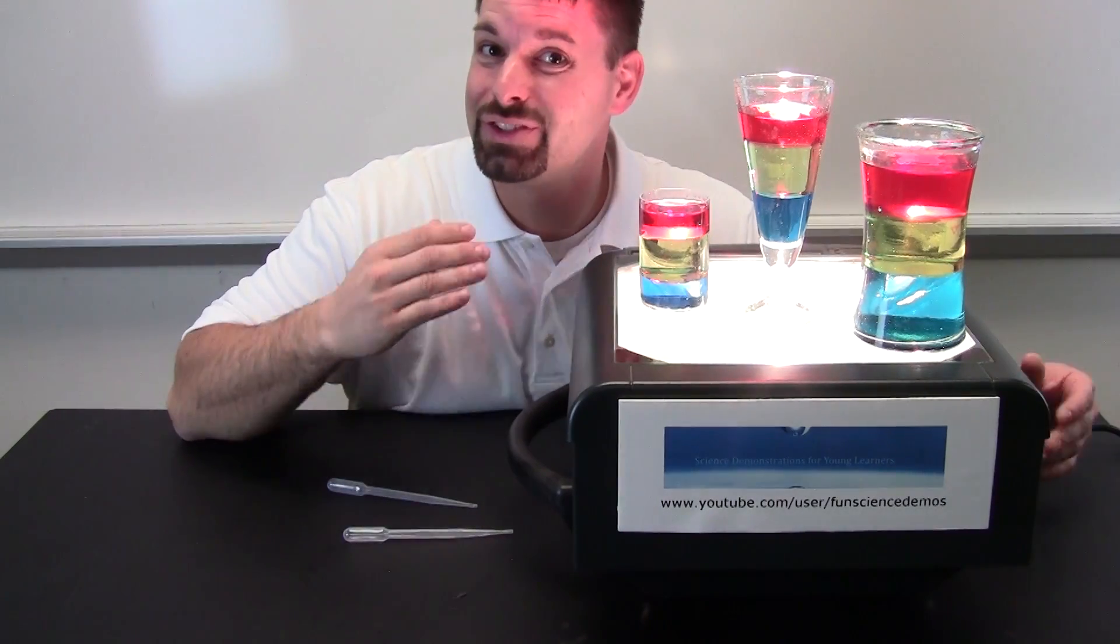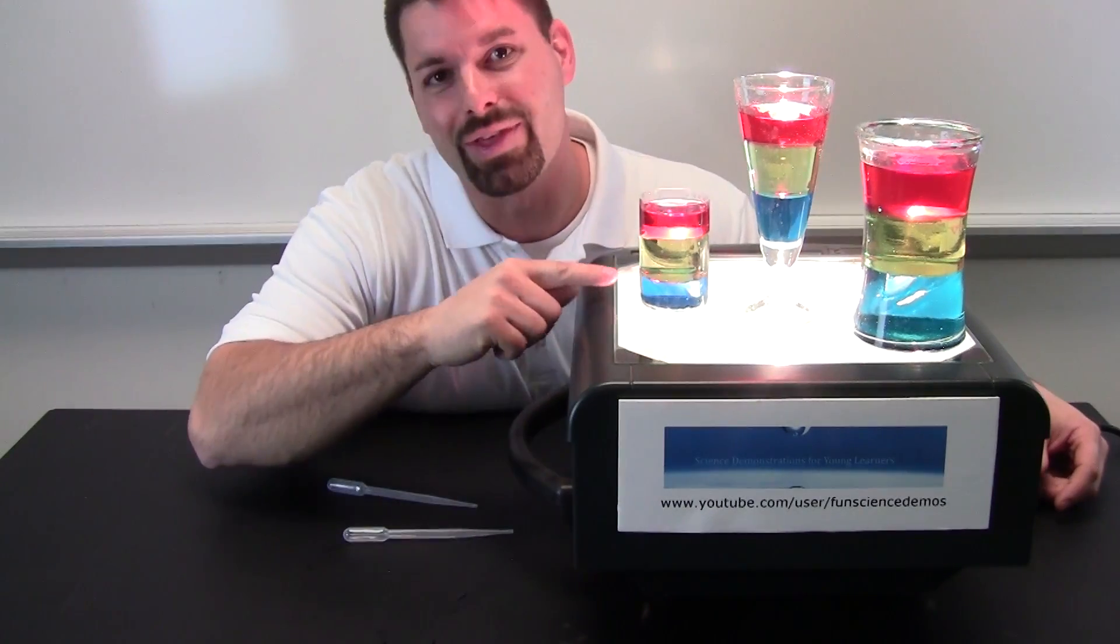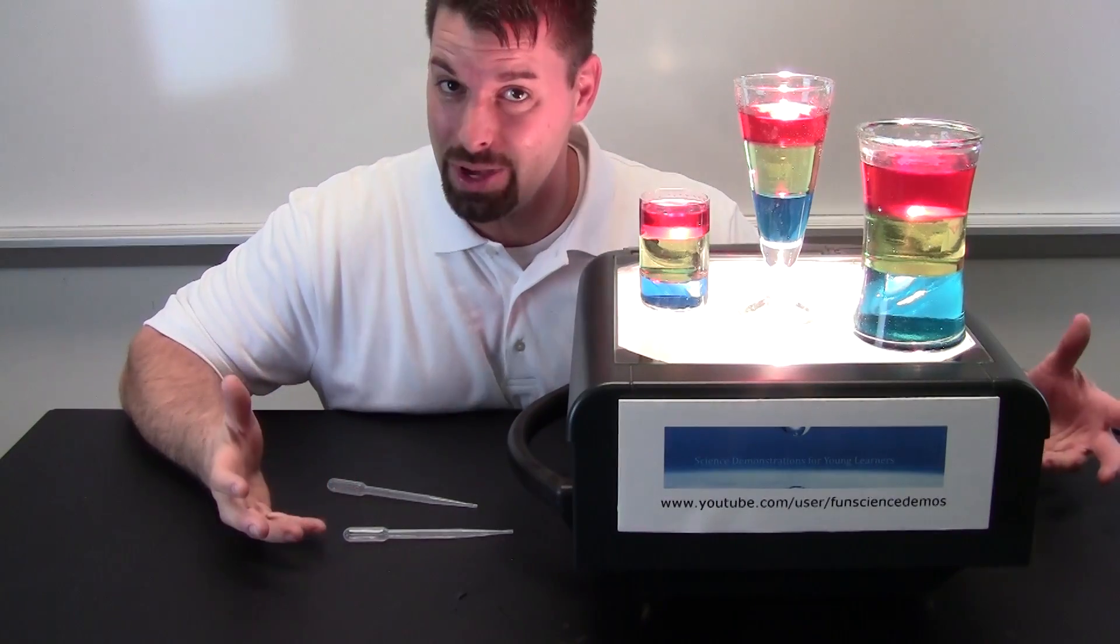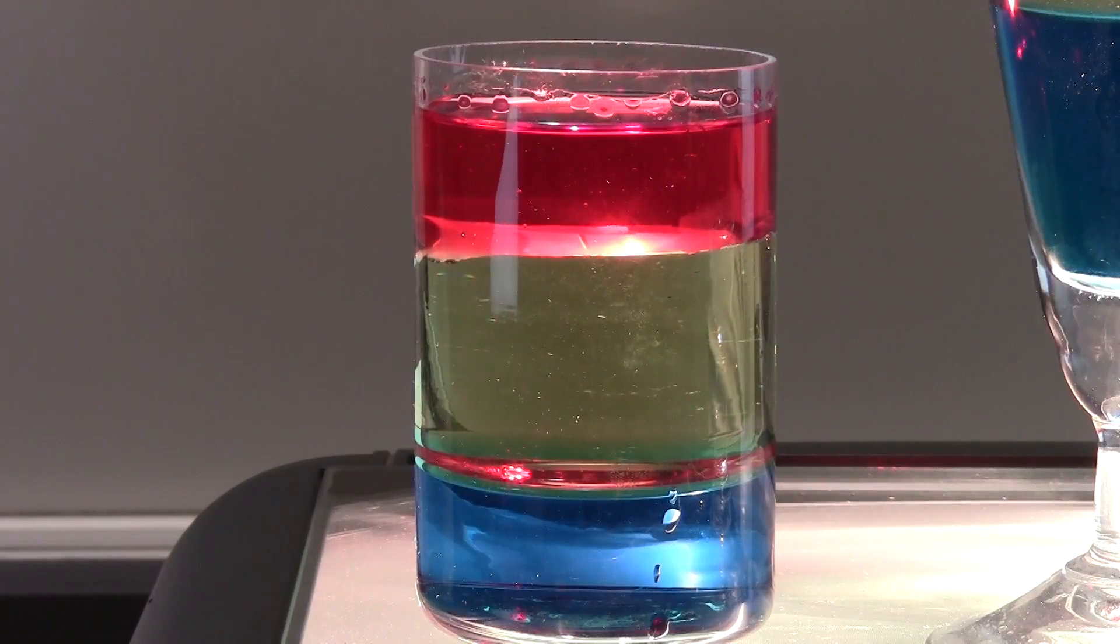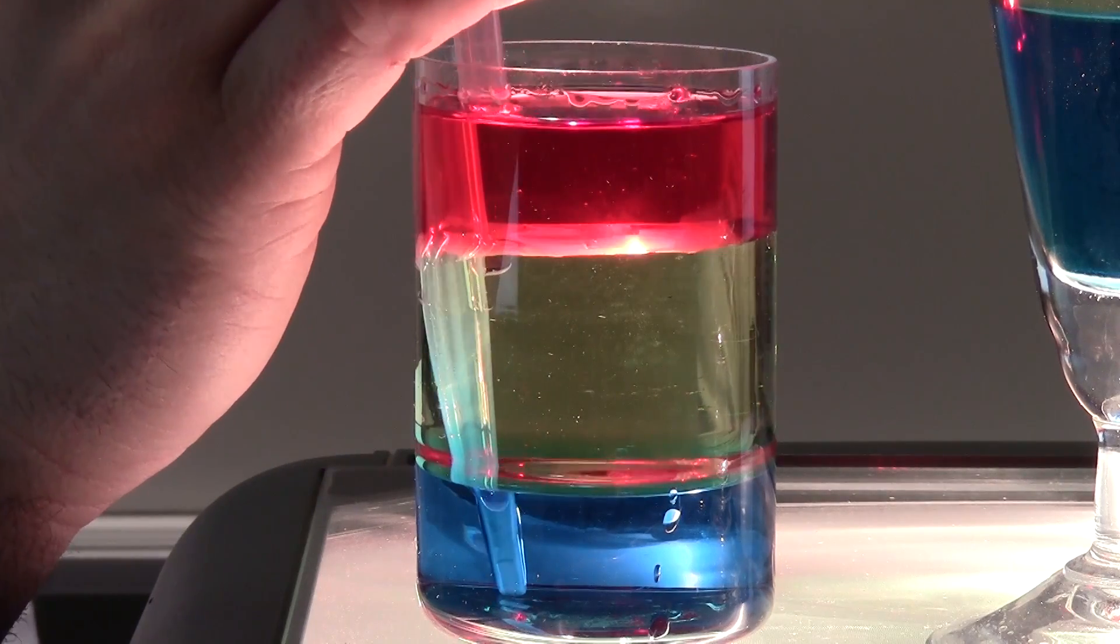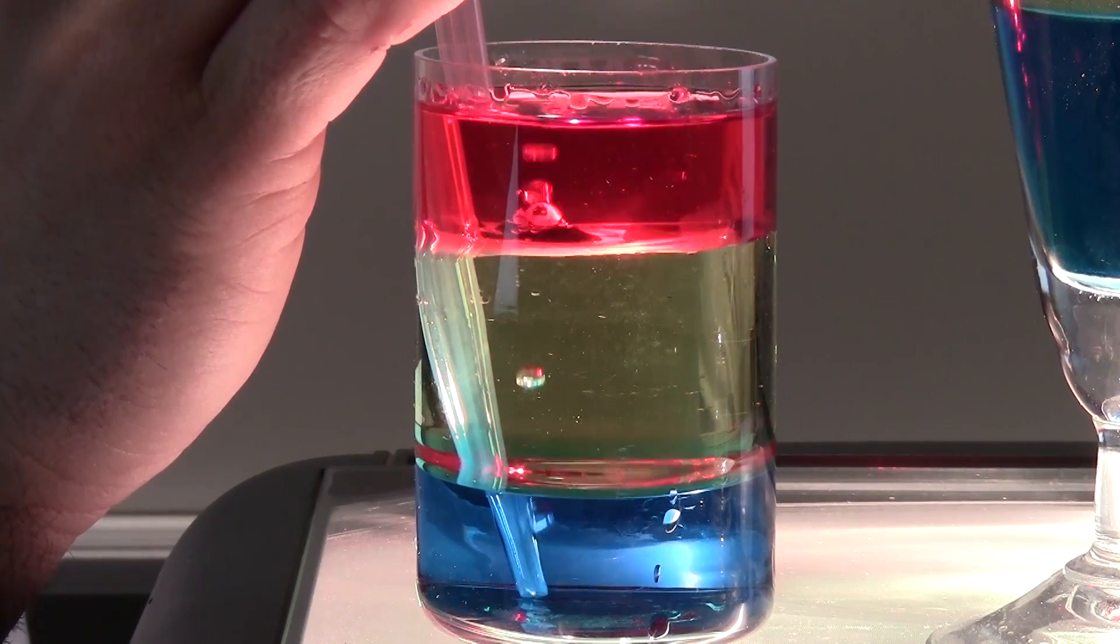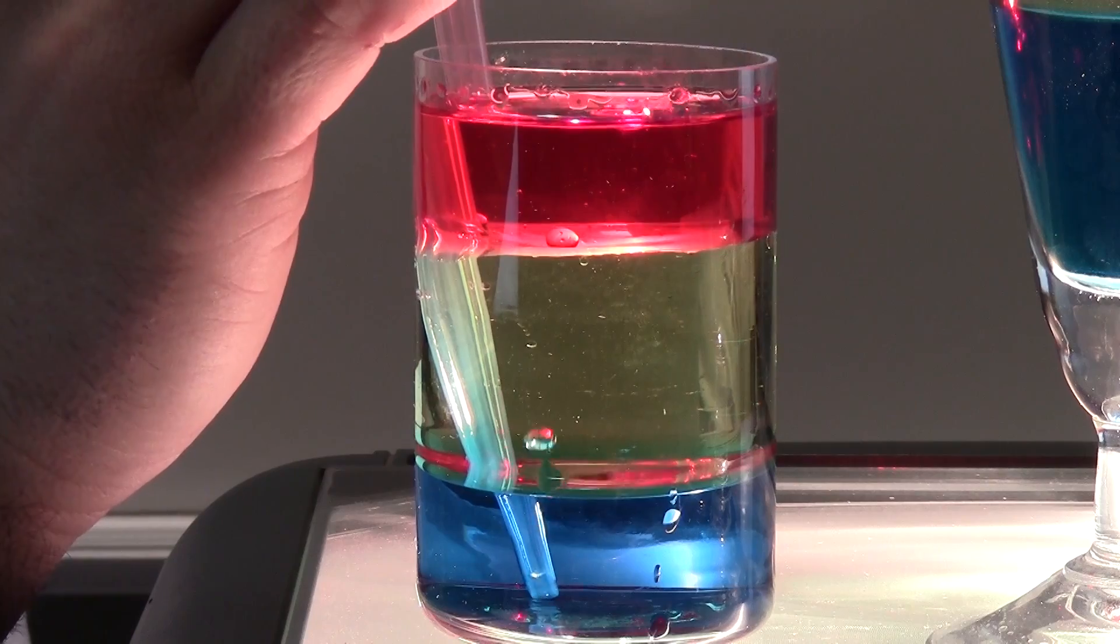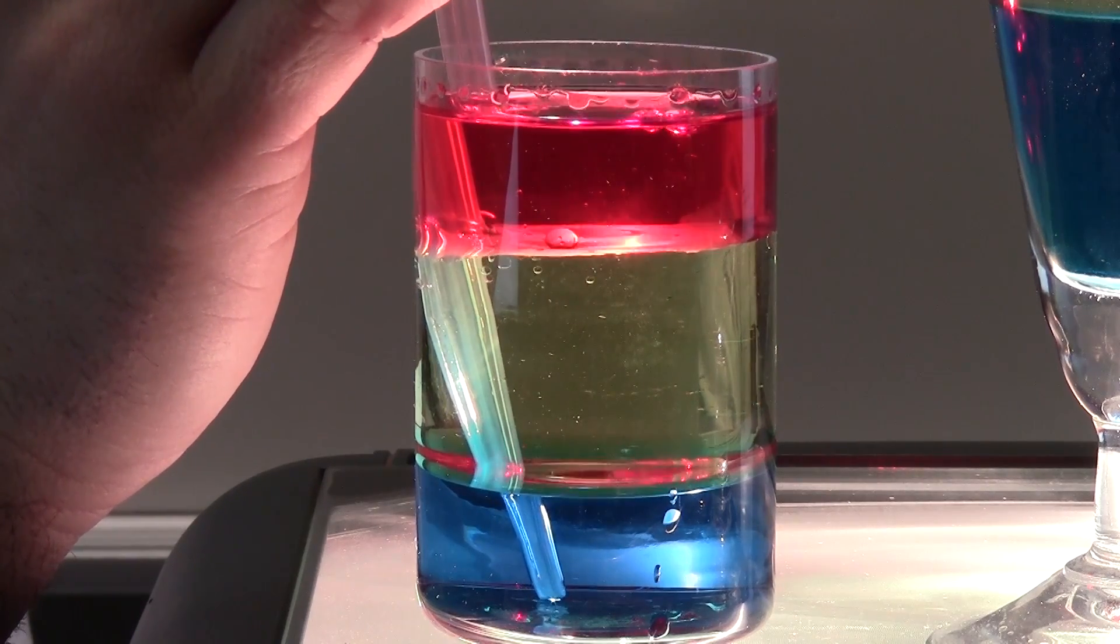Now let us zoom in and see if we can prove that the thicker liquid is on the bottom. So using my eyedropper I am going to go to the bottom and I am going to suck up some of my blue liquid matter. Oh, the air bubbles are floating up. I guess the air is not as dense as the liquids.